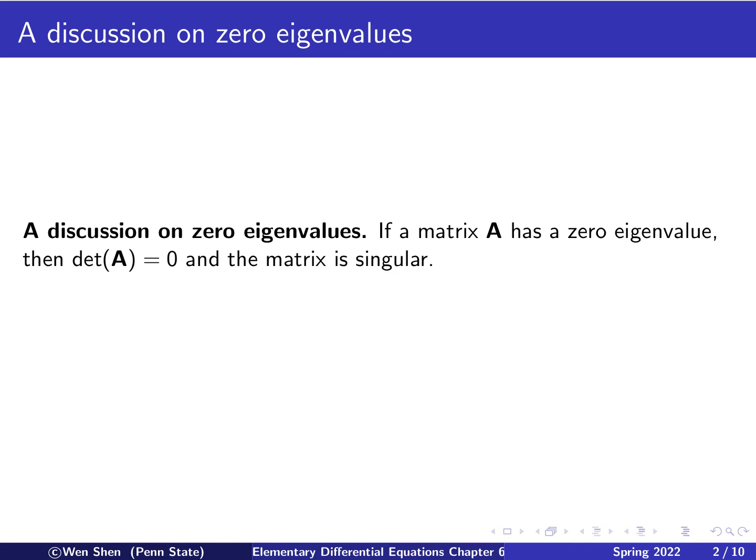In this video, we discuss the case where the A matrix has one or two zero eigenvalues. As usual, we discuss the case for the system of first order equation that can be written in a vector matrix form as follows: X prime equals A times X, where A is the matrix.